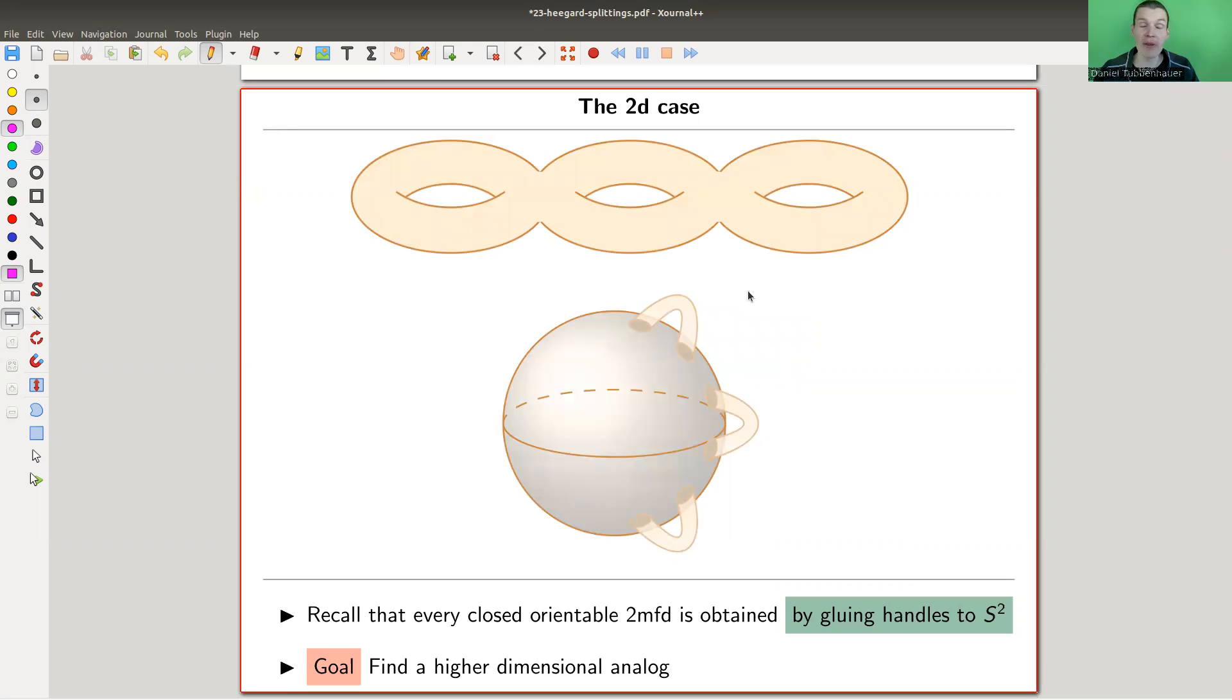In the two dimensional case, we already had the classification of closed orientable two manifolds. They were essentially obtained by gluing handles to a sphere S². We are gluing handles to S², and we obtained the complete classification of closed orientable two manifolds, surfaces.